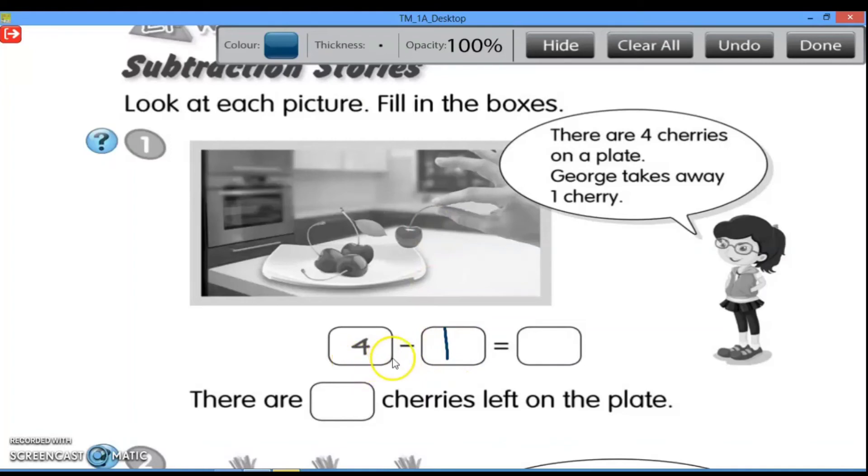Jadi, four minus one equals. Jadi, empat dikurang satu hasilnya adalah. Nah, tinggal teman-teman hitung yang ada di sini. Yang masih ada di piringnya. Kita hitung ya. One, two, and three.